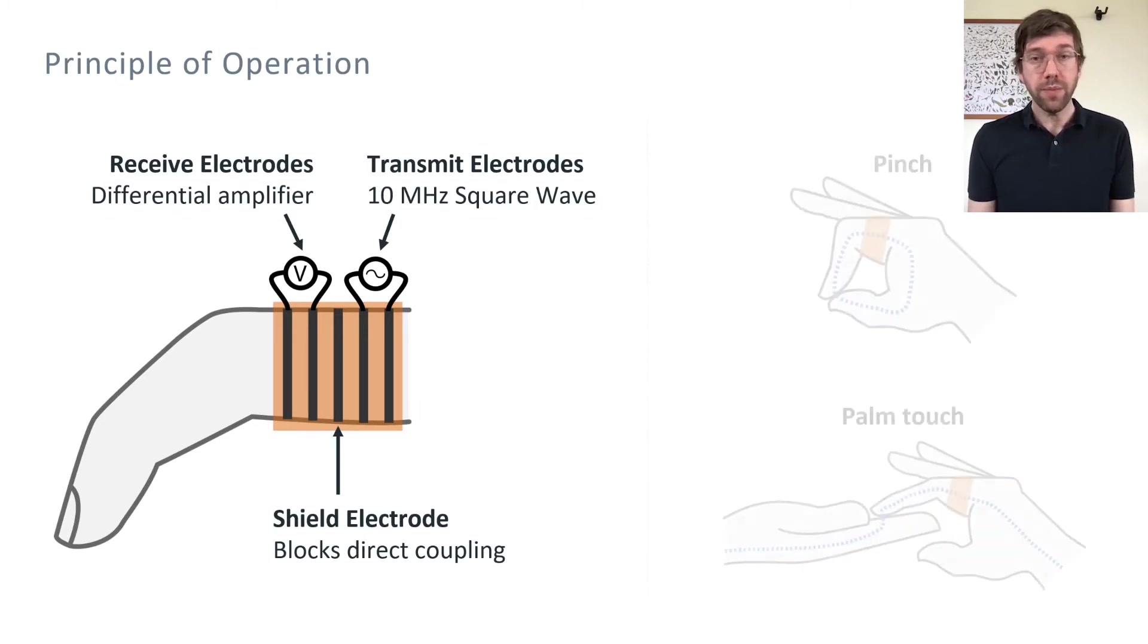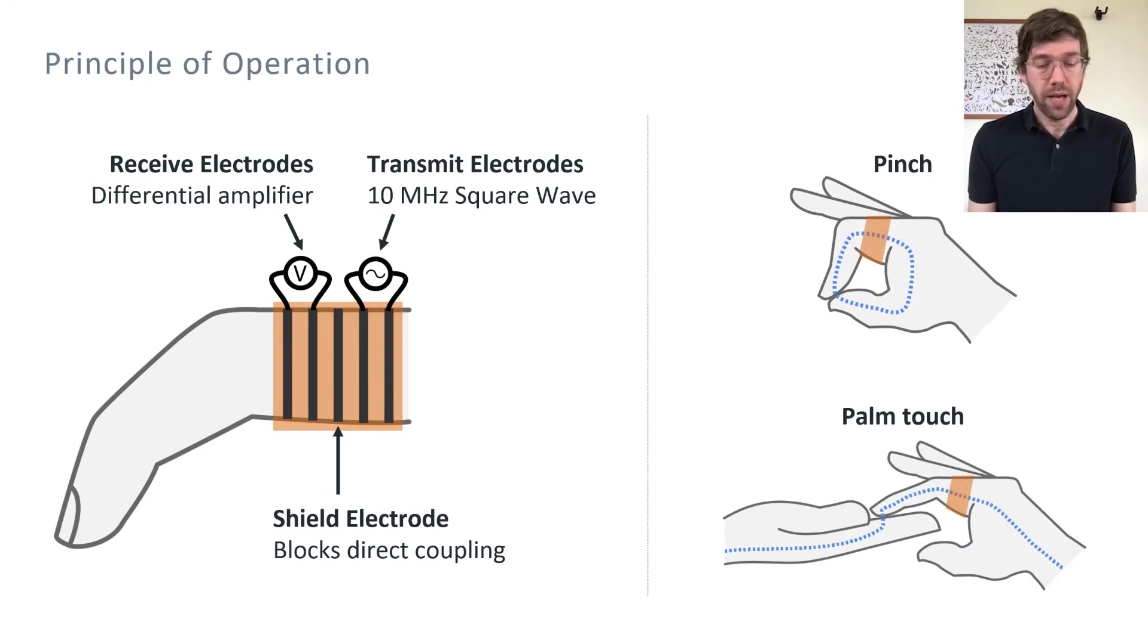When the fingertip comes into contact with another part of the user's body, a signal path is formed, shown here as a blue line. The small current flow creates a differential voltage between the receive electrodes, which are placed along the path. This voltage difference, with some amplification, is the raw output of our touch sensor.